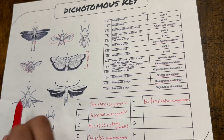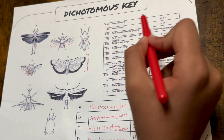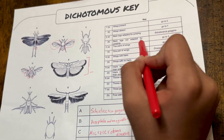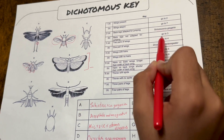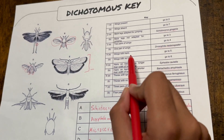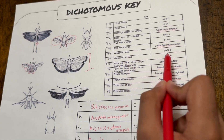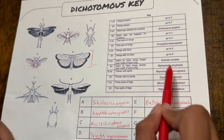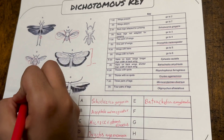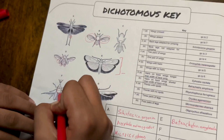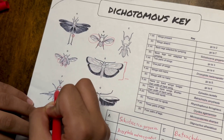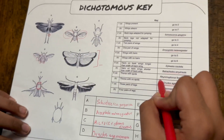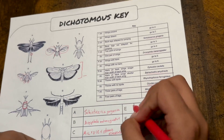Next, let's move to organism F. It has wings, no legs adapted for jumping, and two pairs of wings, so we go to number six. At number six, it actually has a thorax with spots — this part is the thorax, and we can clearly see spots here. Therefore, it is this organism.